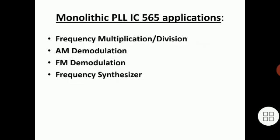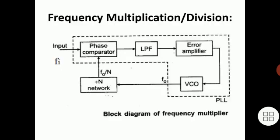These are some applications of PLL IC 565: frequency multiplication or division, AM demodulation, FM demodulation, and frequency synthesizer. The functional blocks inside the frequency multiplication or division circuit are: phase detector, low pass filter with error amplifier, VCO, and a divide-by-N network.